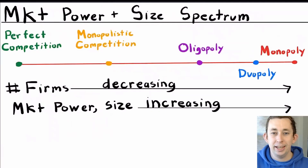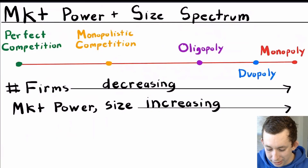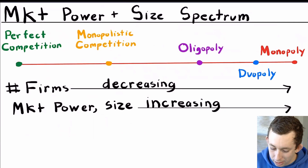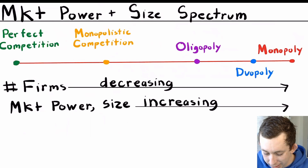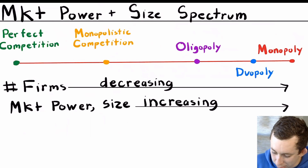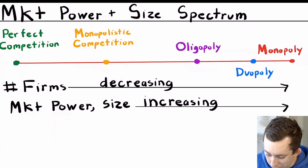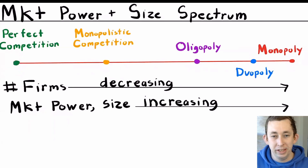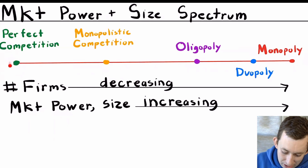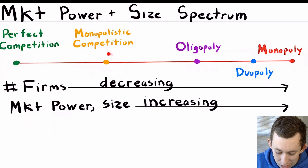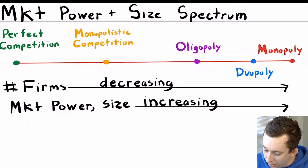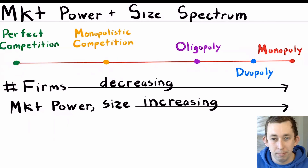The first thing that I think is helpful in keeping these different types of market structures straight is what I call the market power and size spectrum. You can see we have our five different types of market structures. Notice that when we go from perfect competition to monopoly, from left to right, the number of firms is decreasing — from infinitely many, to many, to few, to two, to one — and the market power is increasing.